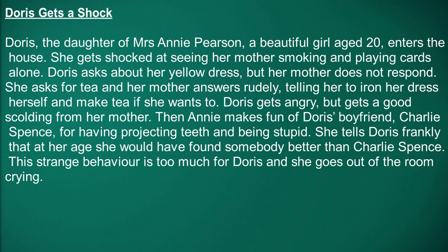The third major subdivision is when Doris gets a shock. Doris, the daughter of Mrs. Annie Pearson — a beautiful girl of age 20 — enters the house. She gets shocked at seeing her mother smoking and playing cards alone. Doris asks about her yellow dress but her mother does not respond. She asks for tea, and her mother answers rudely, telling her to iron her dress herself and make tea if she wants to. Doris gets angry but receives a good scolding from her mother. Then Annie makes fun of Doris's boyfriend Charlie Spence for having projecting teeth and being stupid. She tells Doris frankly that at her age she would have found somebody better than Charlie Spence. This strange behaviour is too much for Doris, and she goes out of the room crying.